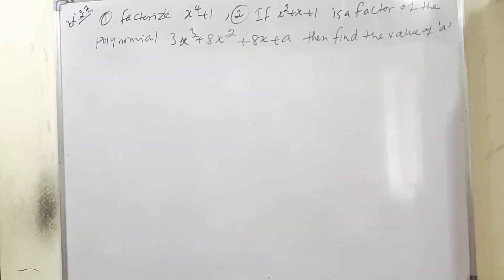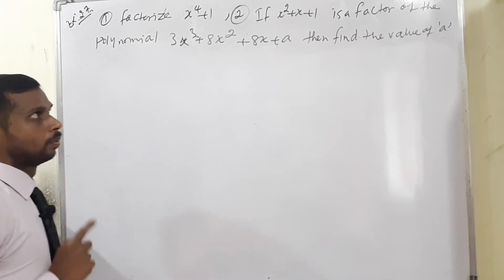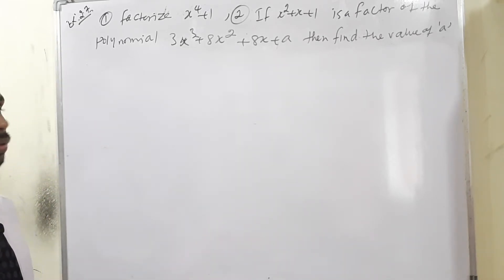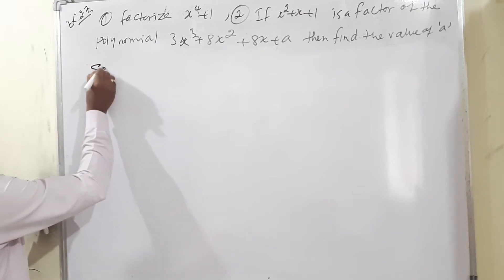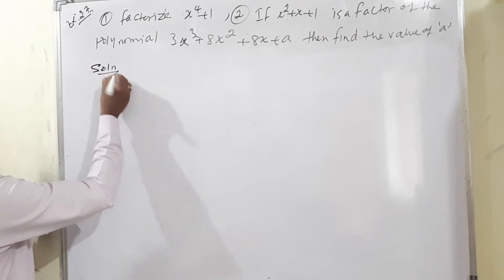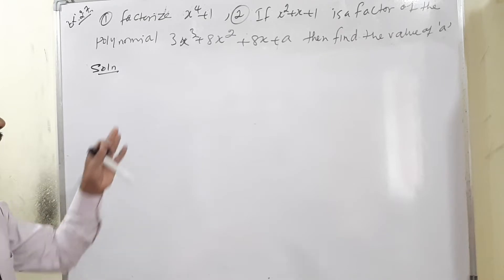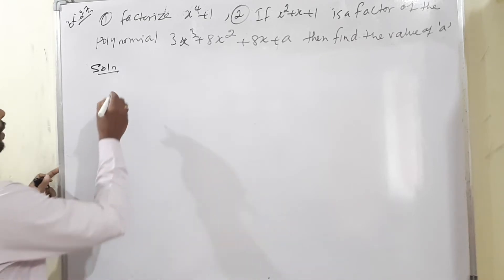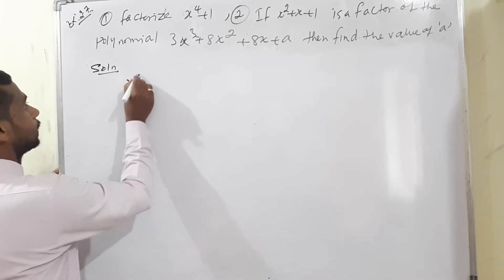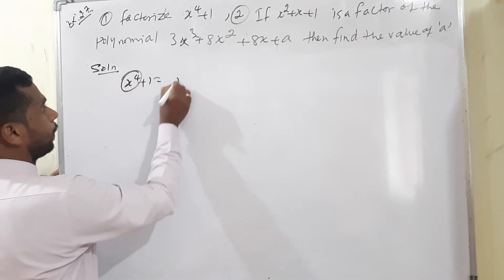Moving to exercise 2.7, question number 1: factorize x⁴ + 1. We write x⁴ as (x²)², so we have (x²)² + 1². Using the identity a² + b² = (a+b)² - 2ab, we get (x²+1)² - 2x².